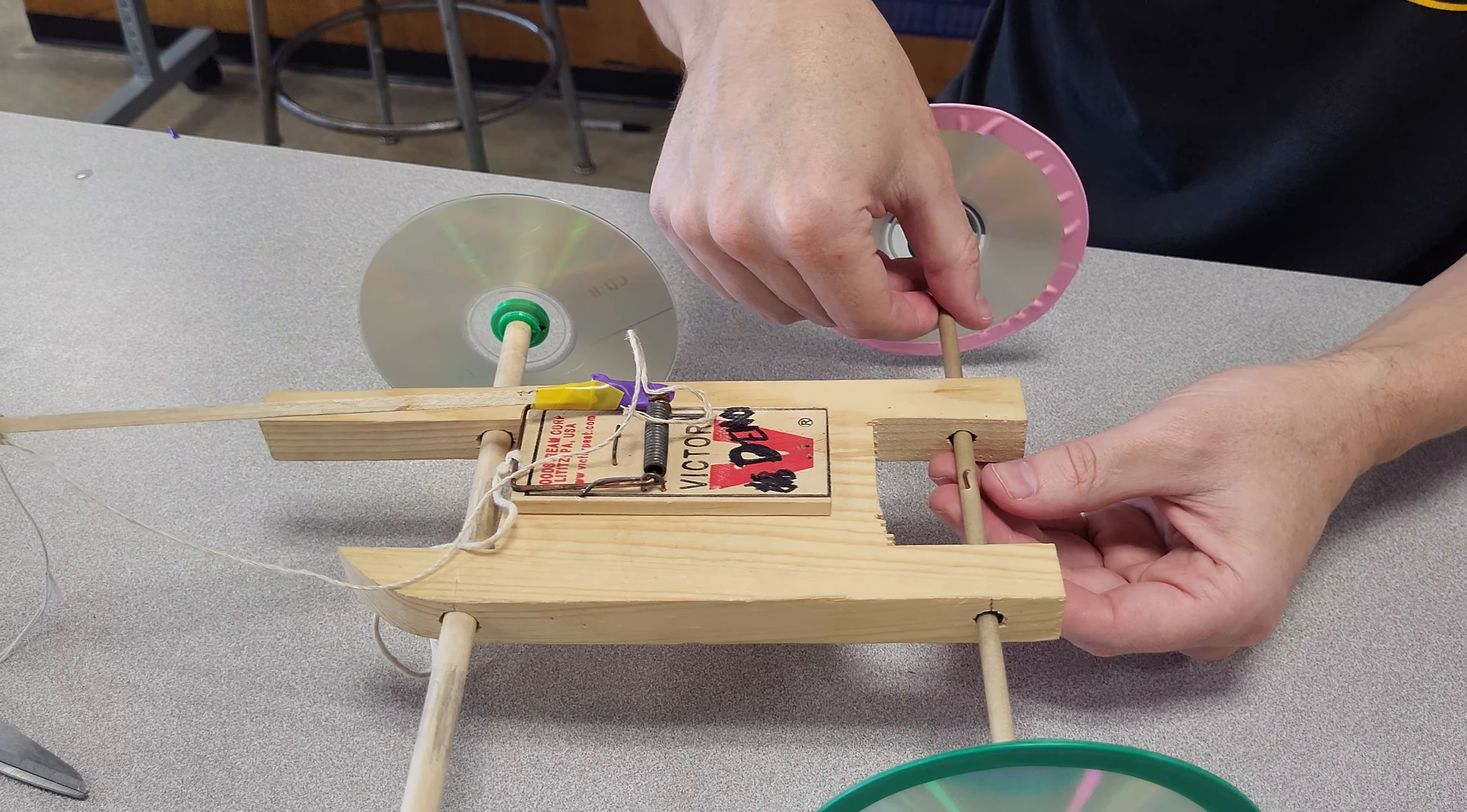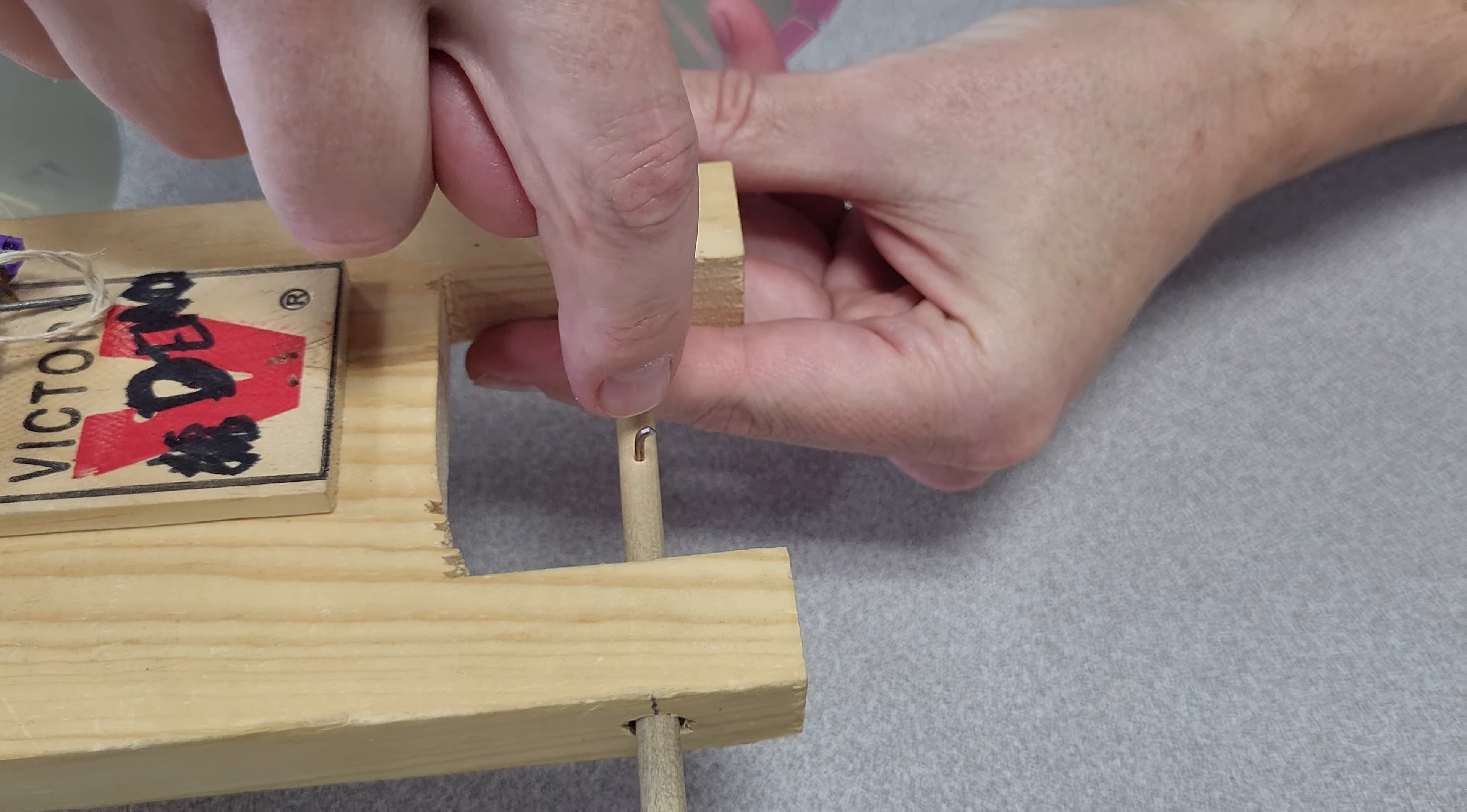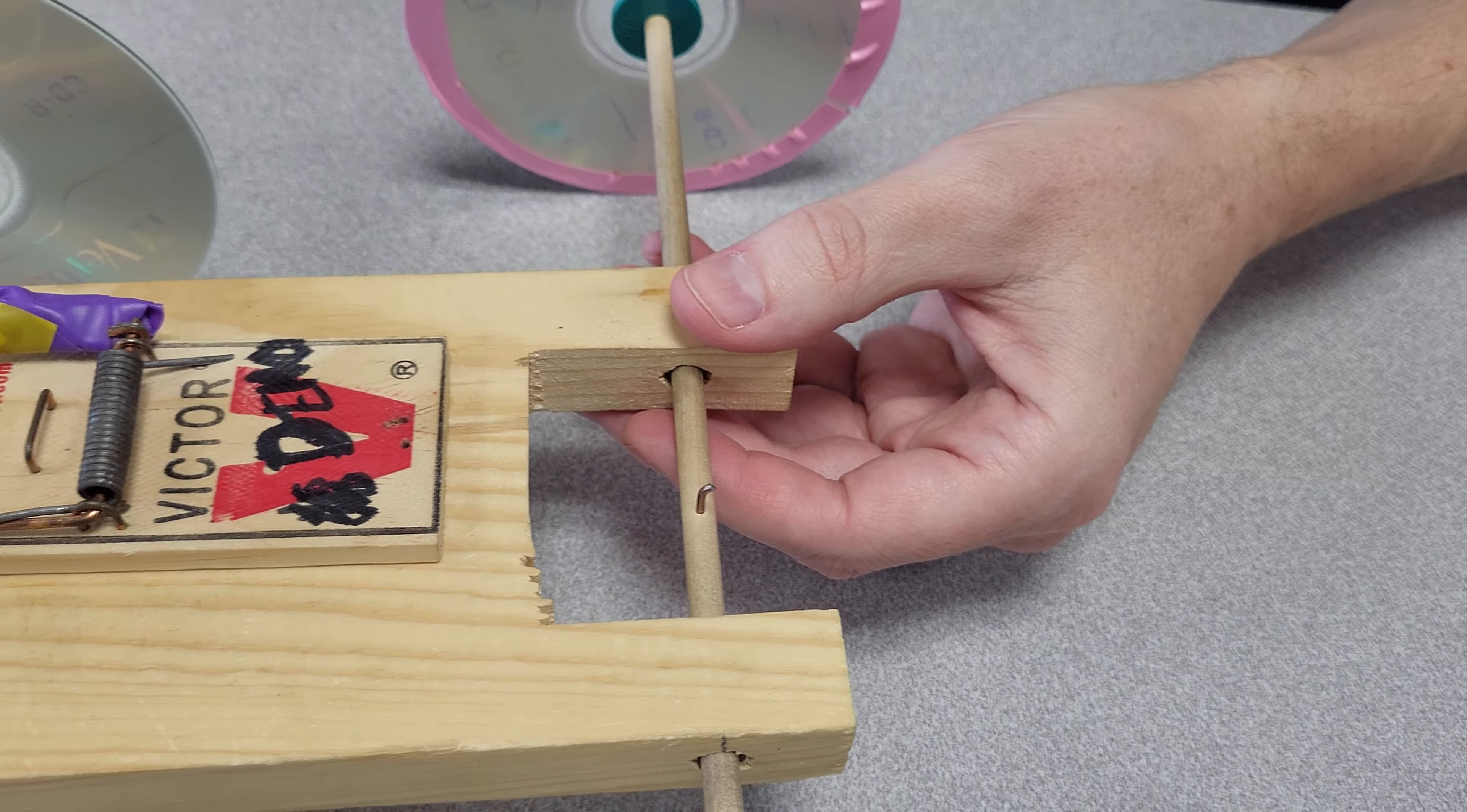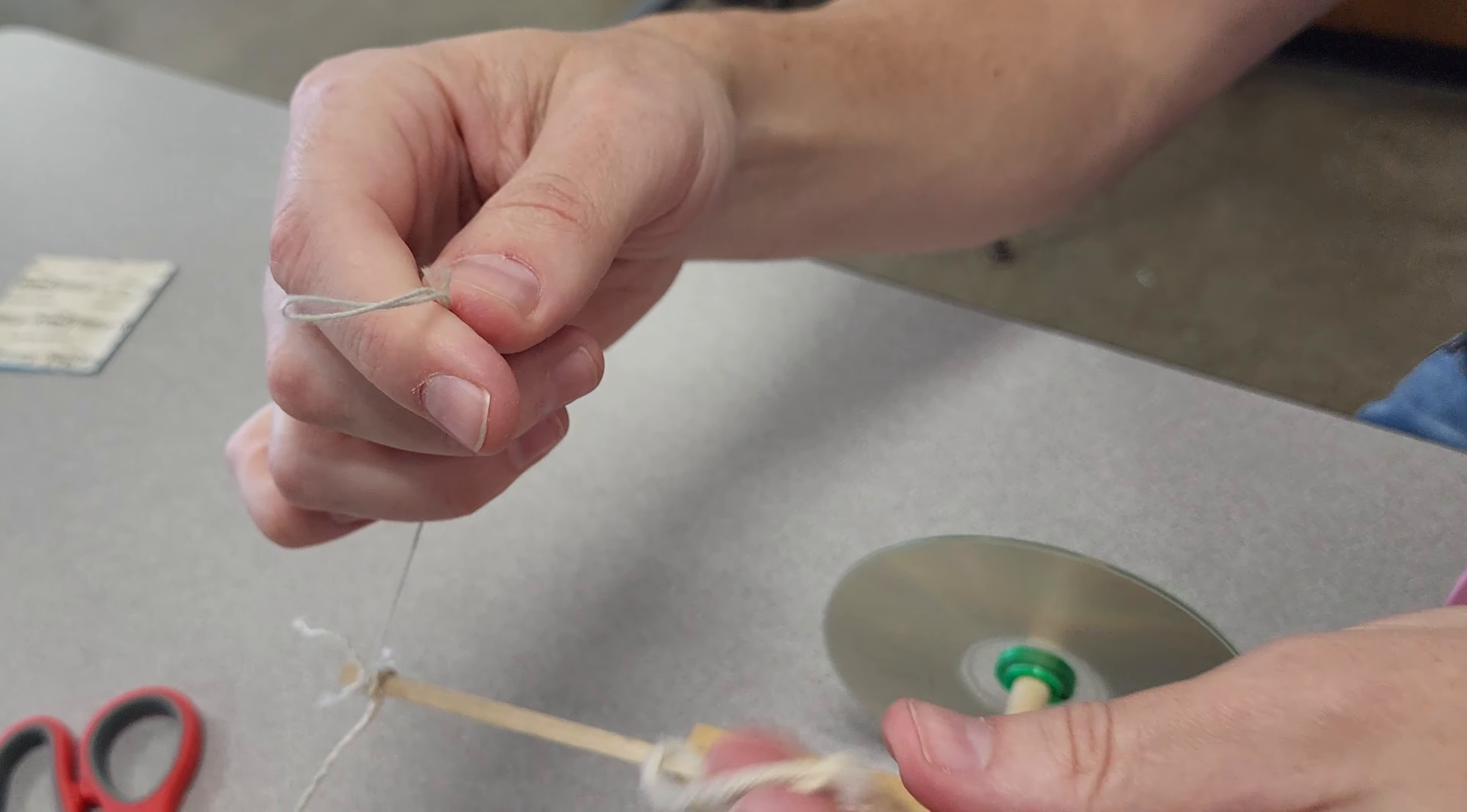Now another option is to put a little hole. I just use a little part of the mousetrap thing, put a 16th inch hole in there, tap that in. If you put a loop in your string like this string has, and this string has,